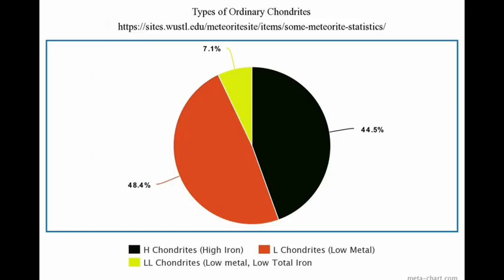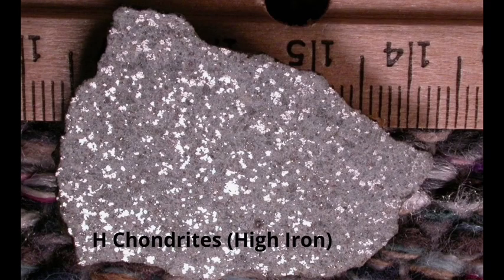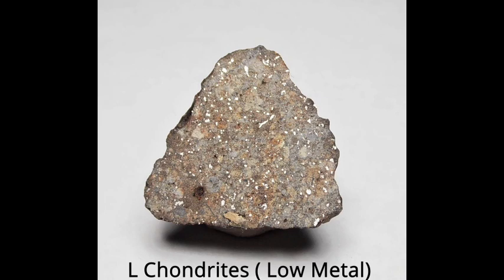When it comes to ordinary chondrites, they are classified based on their composition. One such group is the H chondrites, where H stands for high iron. These meteorites contain a high amount of iron, typically ranging from 25 to 30% of the meteorite's total weight, of which 15 to 19% is in the form of metal grains visible to the naked eye. L chondrites, on the other hand, contain a slightly lower iron content, typically ranging from 20 to 25% of the meteorite's total weight, with metal grains making up only around 1 to 10% of the meteorite's weight.